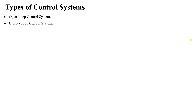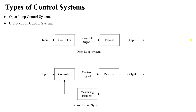In an open-loop system, we have a certain input — for example, we want the speed of a motor to be 1500 RPM. This is the reference speed. This reference speed is given to a controller that translates it into a control signal, which can be a voltage of 120 volts given to our process — in this case, our motor.